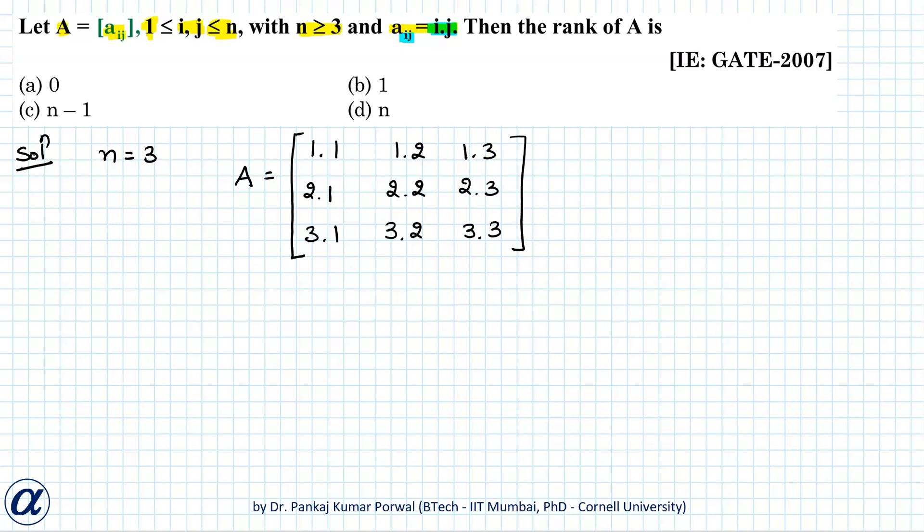Now here note that from the first column I can take 1 common, from the second column I can take 2 common, from the third column I can take 3 common. Similarly from the first row I can take 1 common, from the second row I can take 2 common, and from the third row I can take 3 common.